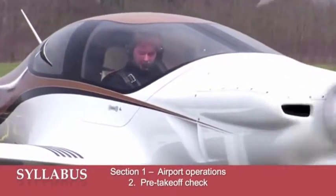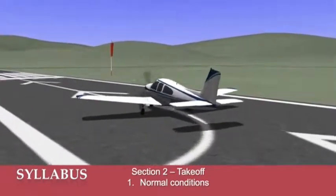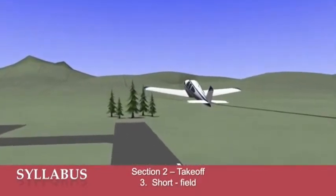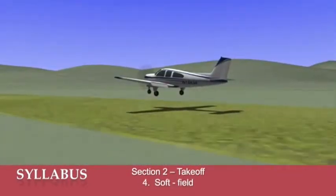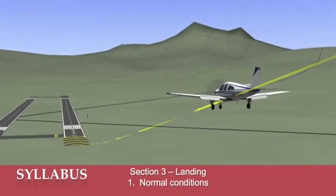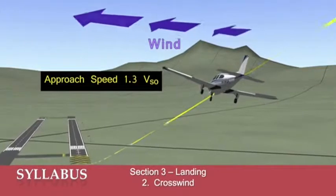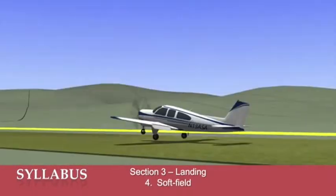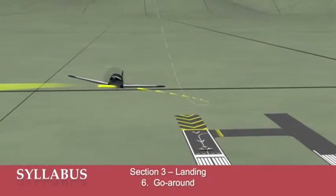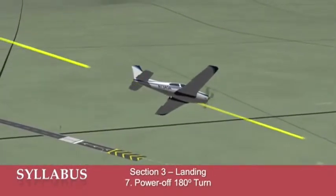In Section 2, the takeoff phase will cover normal conditions, crosswind, short field, and soft field takeoff. In Section 3, the all-important landing section will cover normal conditions, crosswind, short field, soft field, forward slip, go-around, and my personal favorite, the power-off 180-degree turns.